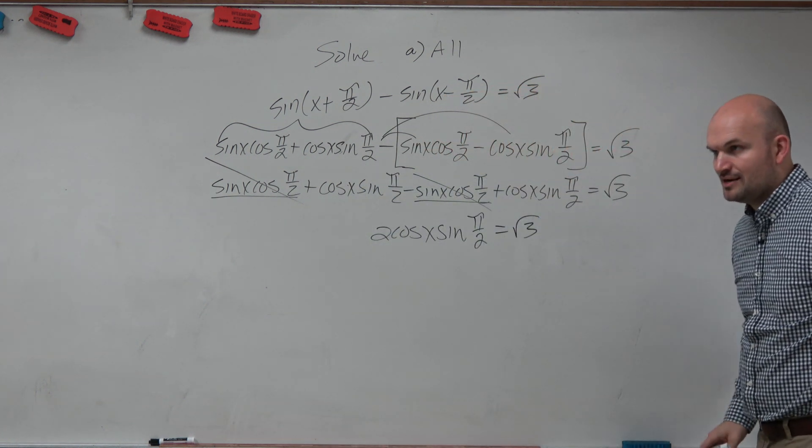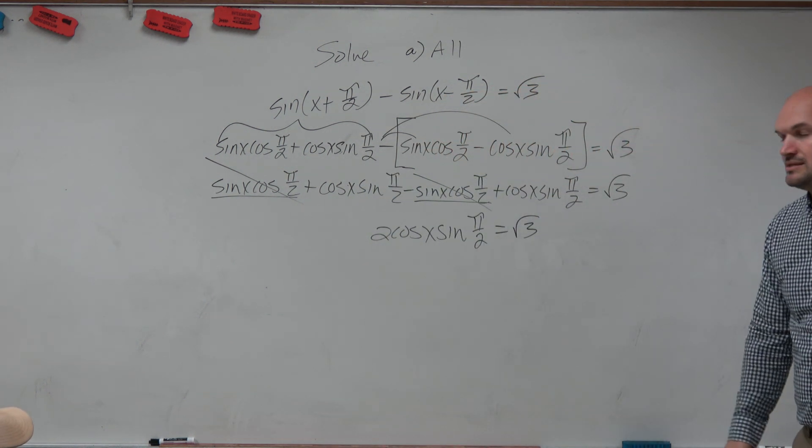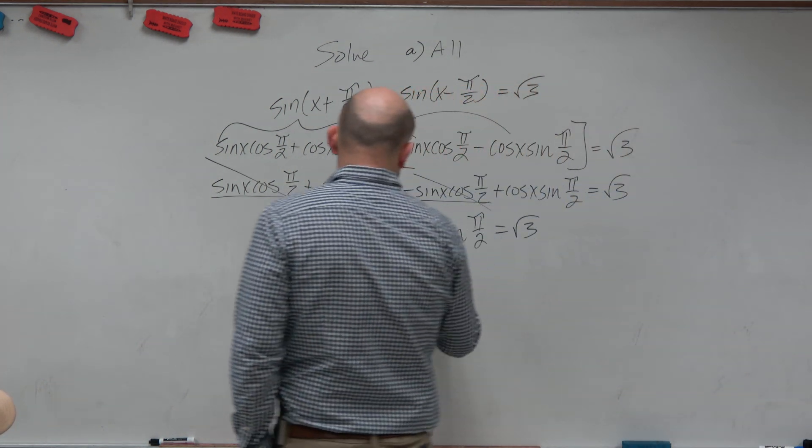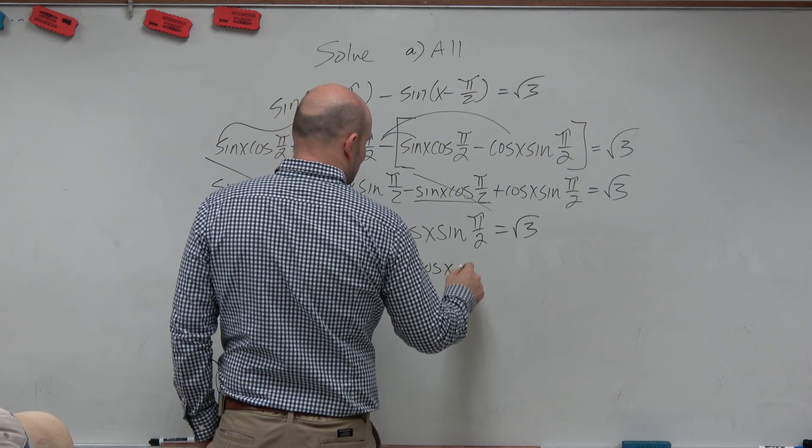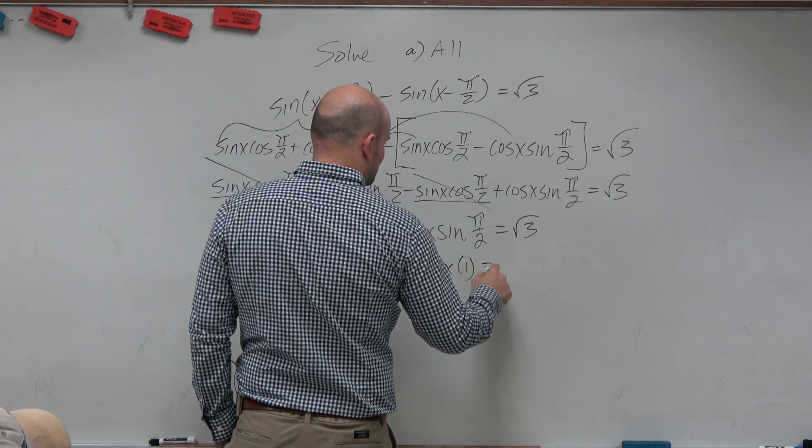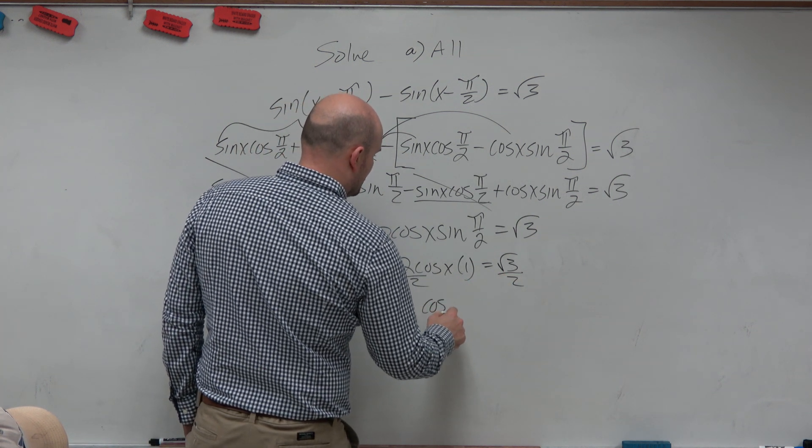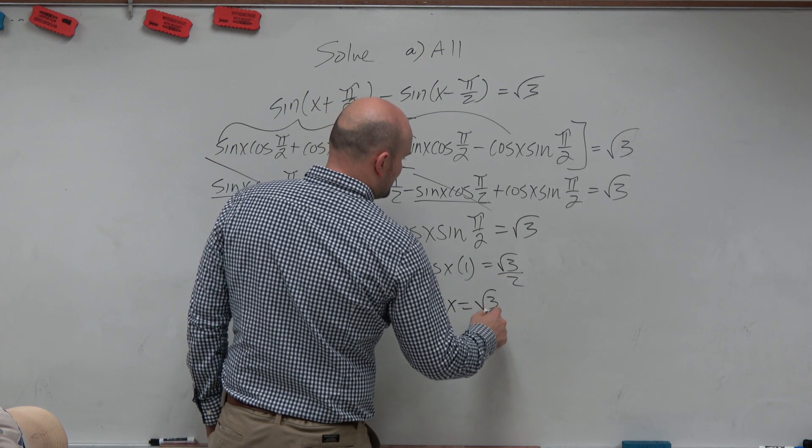Now, can we evaluate for the sine of π/2? Yes. The sine of π/2 is 1. And then we can divide by 2, so cosine of x equals square root of 3 over 2.